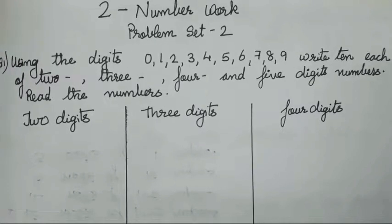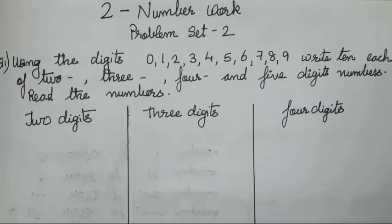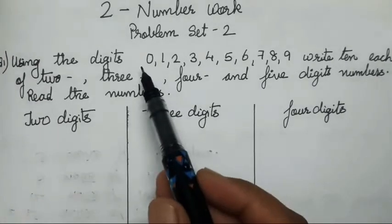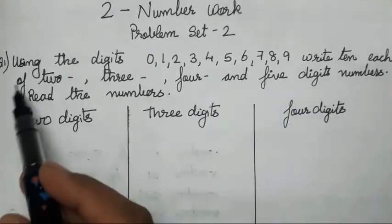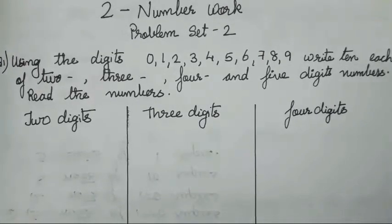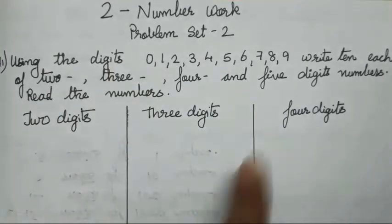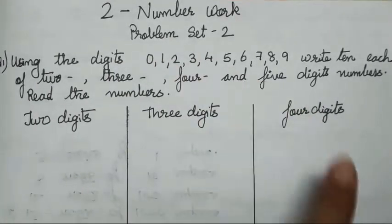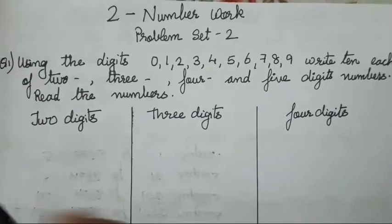Hello everyone, welcome back to my channel. Today we are going to study chapter number two, number work, problem set number two. We are going to complete it in today's video. So let's start with the first question: using the digits given in the textbook, write 10 each of two, three, four and five digit numbers.